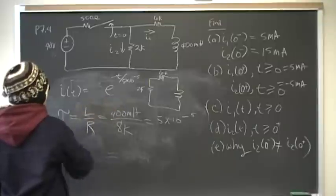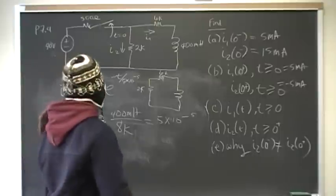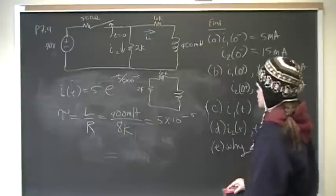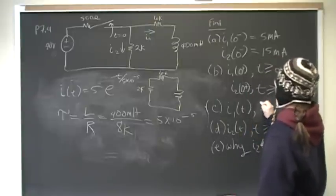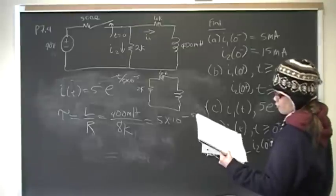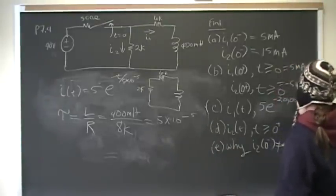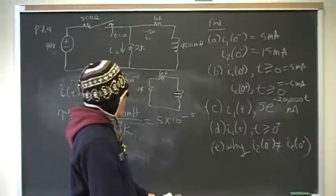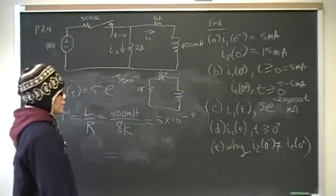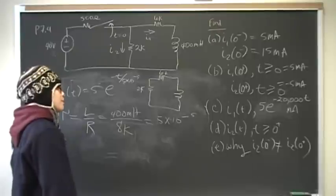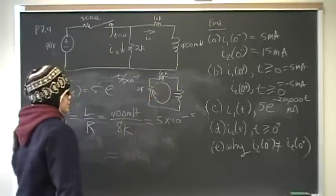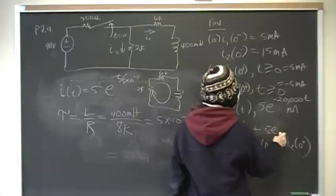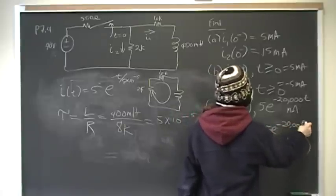Substituting in, with initial current 5 milliamps and tau of 5 times 10 to the negative 5, the general equation for the natural response is: I1(t) equals 5e to the negative 20,000t milliamps, for part C. For part D, the general equation for the natural response of current through the 2k resistor is just the negative of I1, so I2(t) equals negative 5e to the negative 20,000t milliamps.